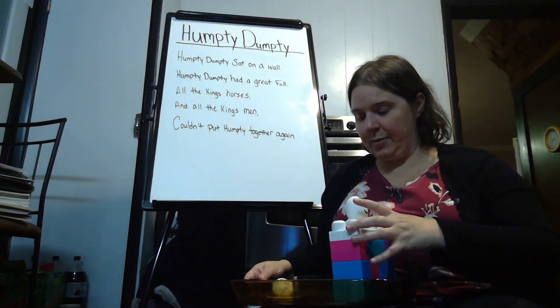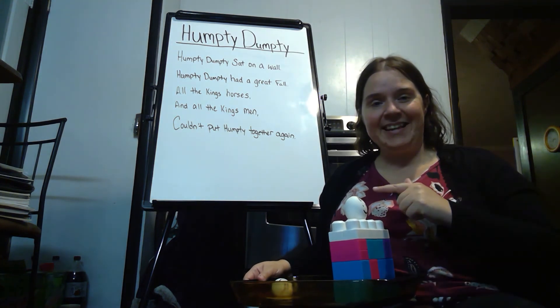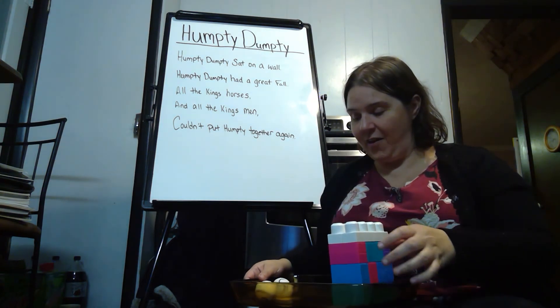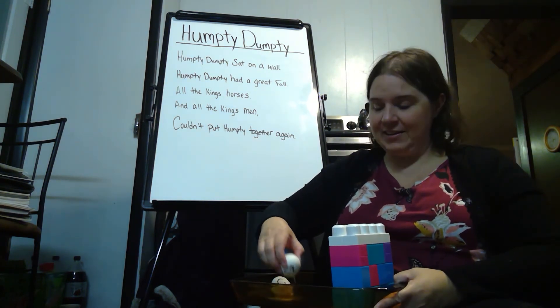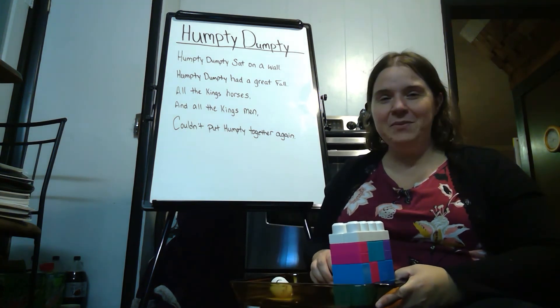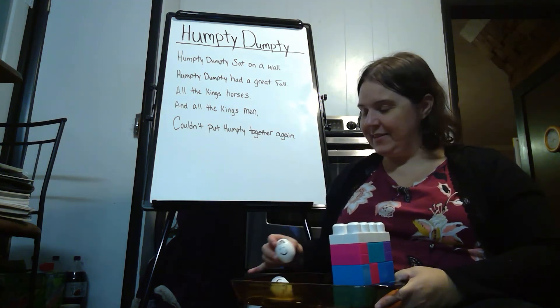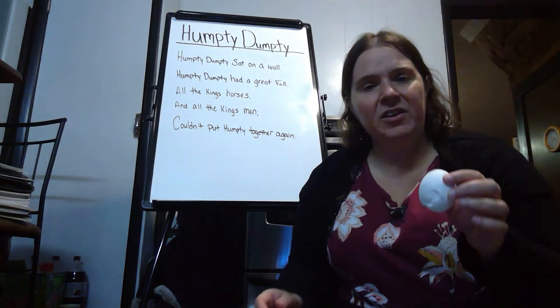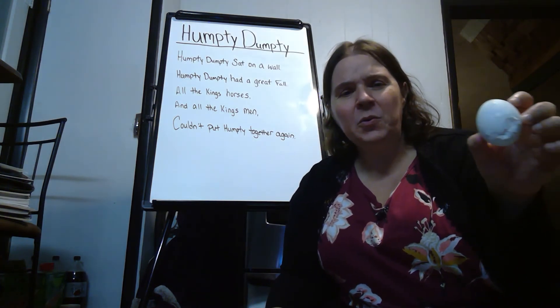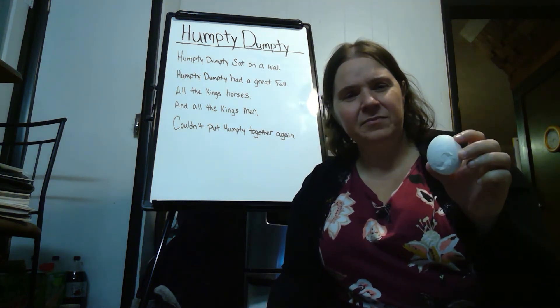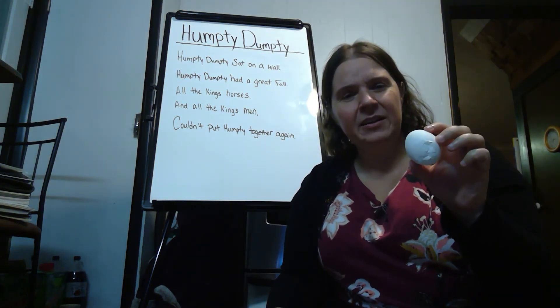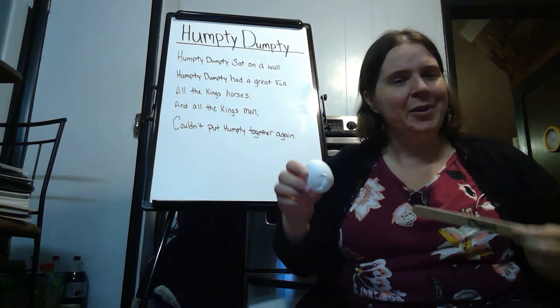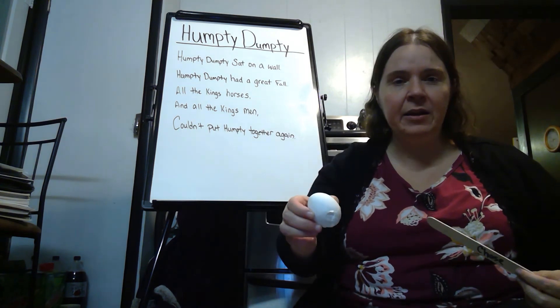Okay. Here we go. Say the poem with me. Humpty Dumpty sat on a wall. Humpty Dumpty had a great fall. All the king's horses and all the king's men couldn't put Humpty together again. So when Humpty fell, I heard a crack. But this one looks different. What's different about this egg? Can anybody tell me? Chase, can you tell me? You're right. Nothing's coming out of it. I wonder why.